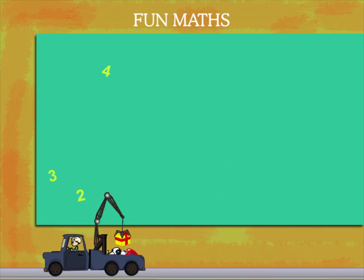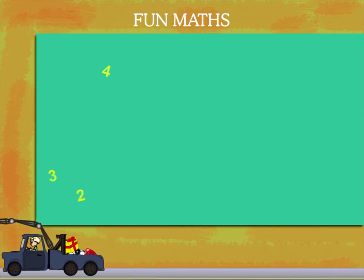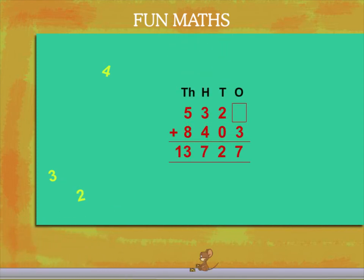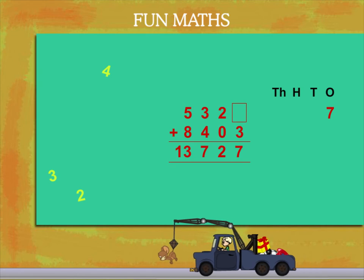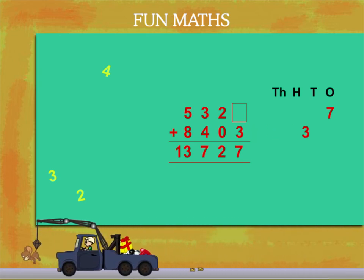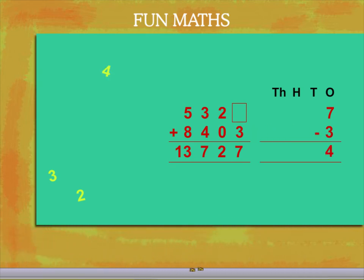Now, we have 3 yellow figures left and here comes the next problem. This time the blank box is in the ones place. So, from the sum, we take 7 ones and subtract 3 ones to get 4. The yellow 4 will fit into the blank box.